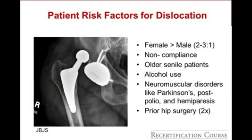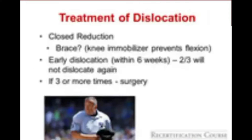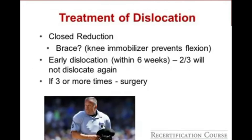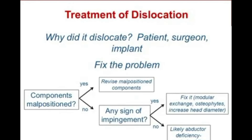Patient risk factors for dislocation include females, neuromuscular problems like Parkinson's disease, alcohol use, and prior hip surgery. The initial dislocation is treated with closed reduction. A brace is somewhat controversial, but a neomobilizer can prevent knee flexion and may be beneficial for posterior hip dislocation. For the early dislocator within the first six weeks, two-thirds will not dislocate again. Once a patient has dislocated three times, revision surgery should be discussed.